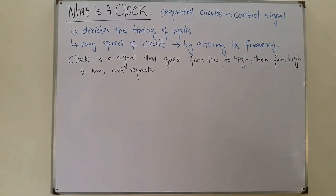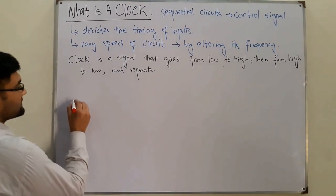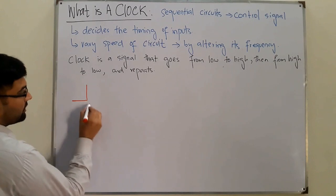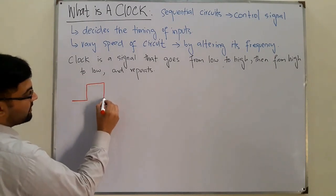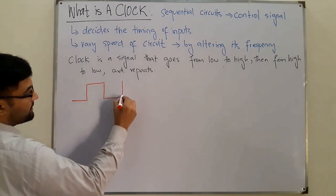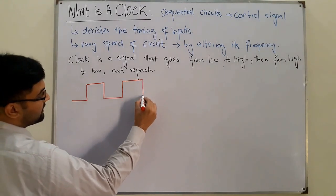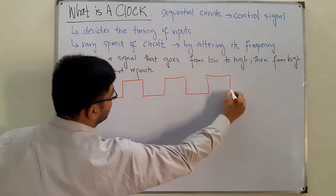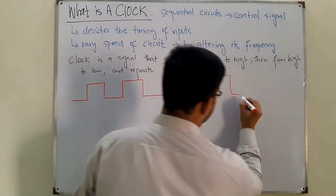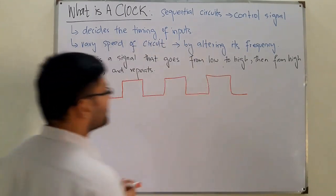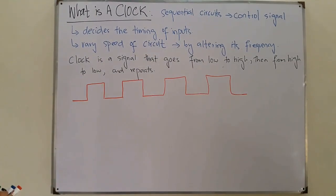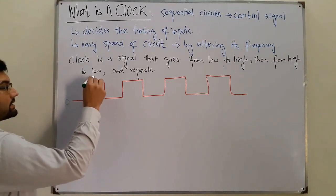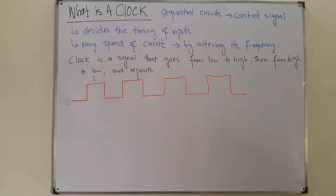Now if you draw the waveform of the clock signal: it was low, it went to high, it is back to low, it goes back to high — low, high, low, high, low, high. That is how the clock goes. When it is at the low state it is a zero, and when it is at the high state it is a one. This is the waveform of the clock signal.